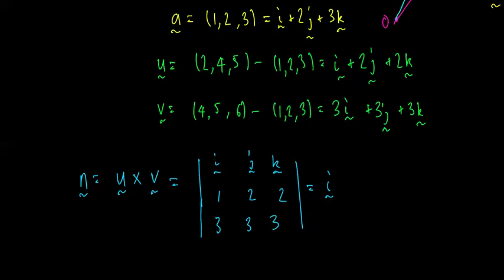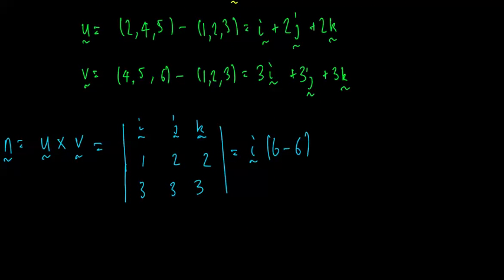Okay, so that's equal to, i, 2 times 3 is 6, minus 2 times 3 is 6, minus j. Always remember the minus for the j component. 1 times 3 is 3, minus 3 times 2 is 6, plus k. 1 times 3 is 3, minus 3 times 2 is 6.